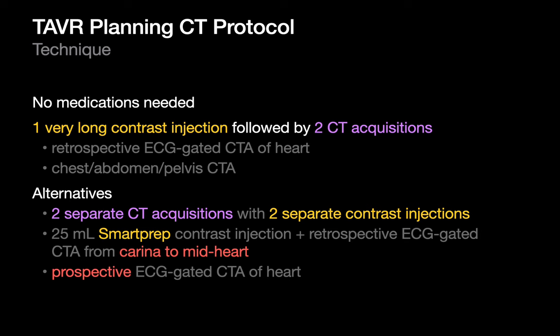You do a retrospective ECG-gated CTA of the heart, pause, move back up, and then do a chest abdomen pelvis CTA. The advantages of doing a TAVR planning CT this way are that it requires only one breath hold, which is easier on your patient, and only one contrast injection, which is easier for your CT tech. The disadvantage is that you end up with contrast in the right heart chambers, which some purists dislike.